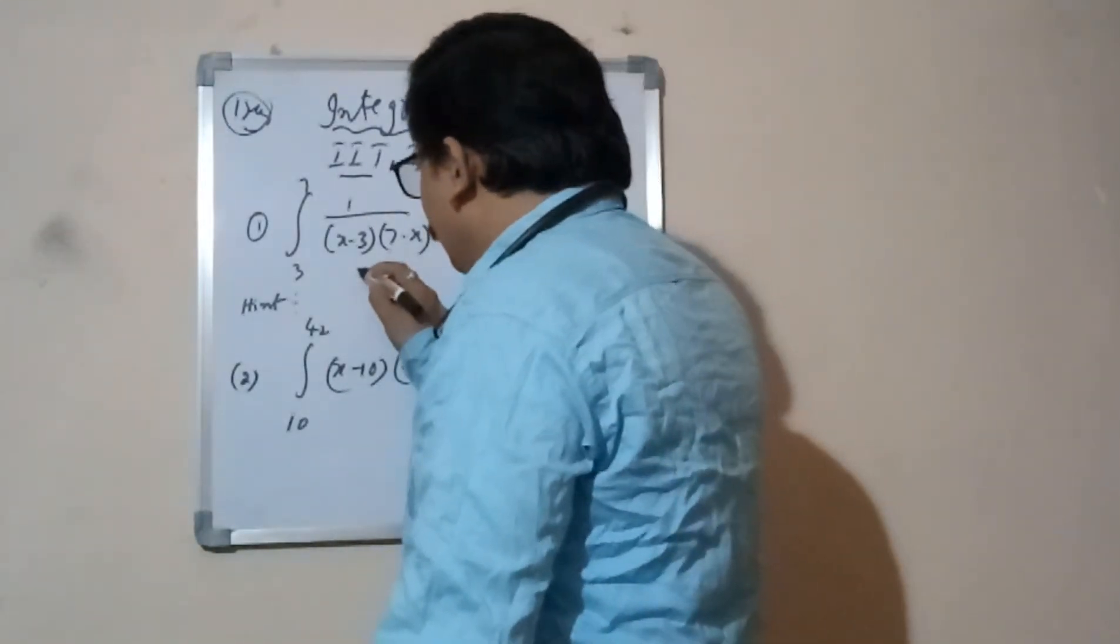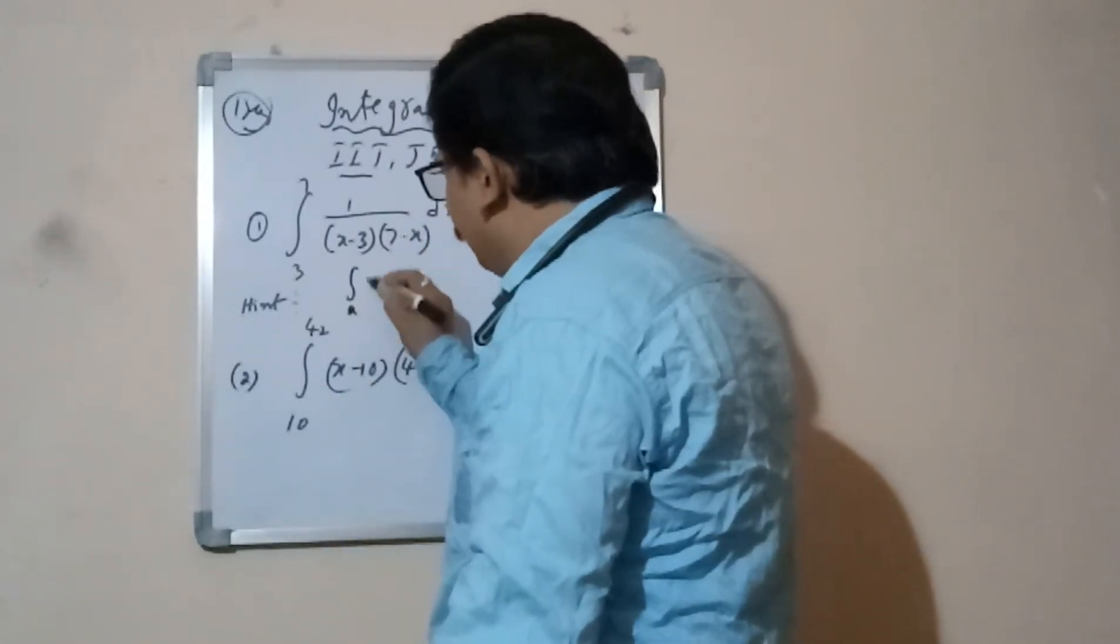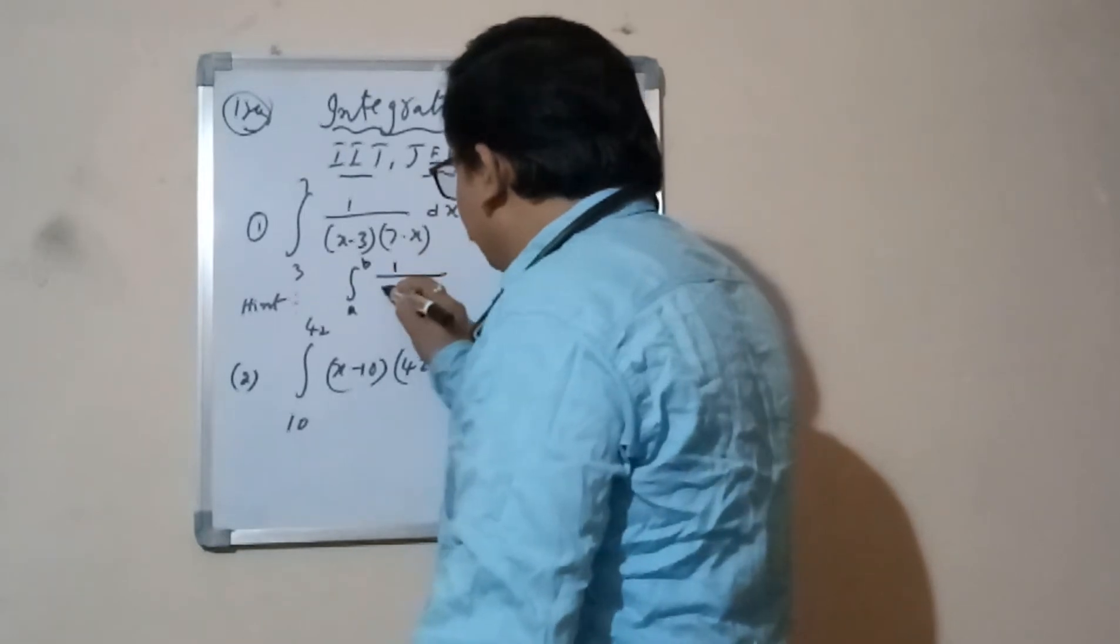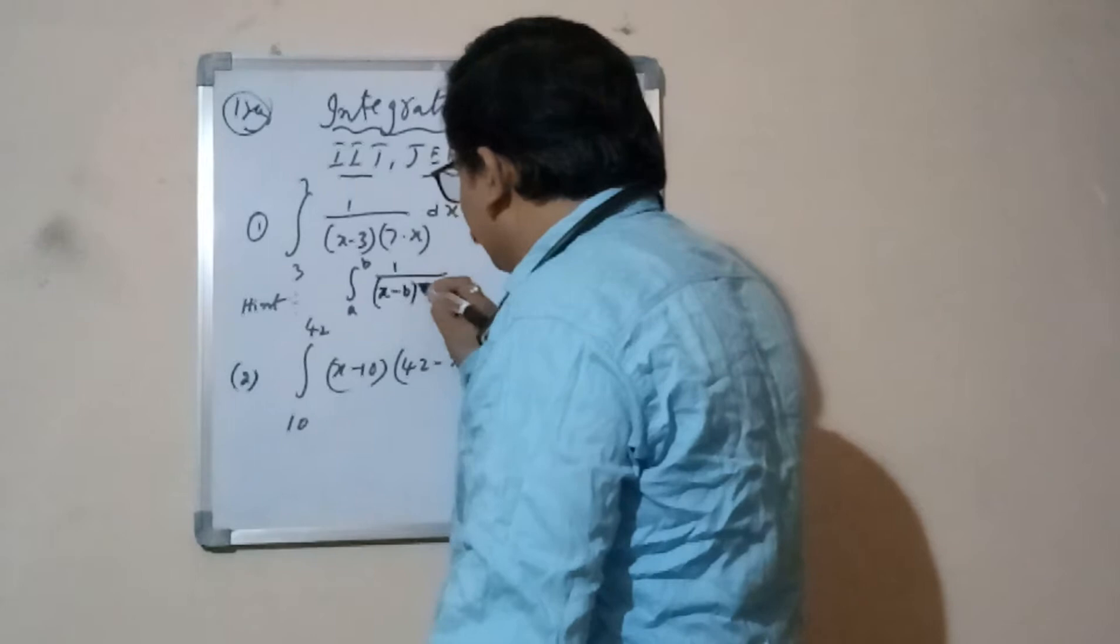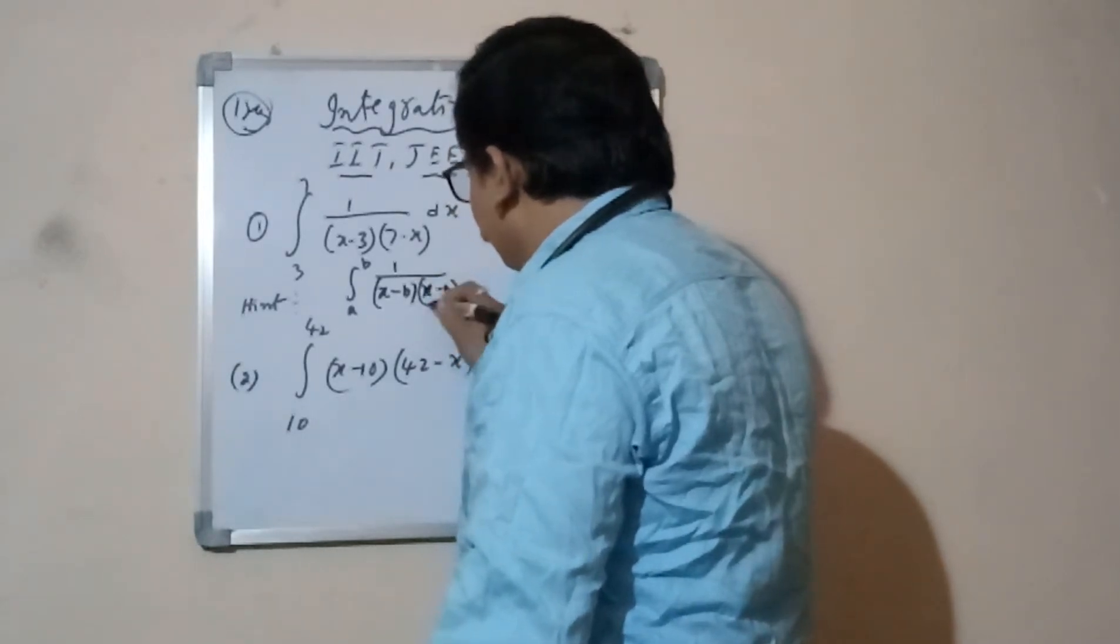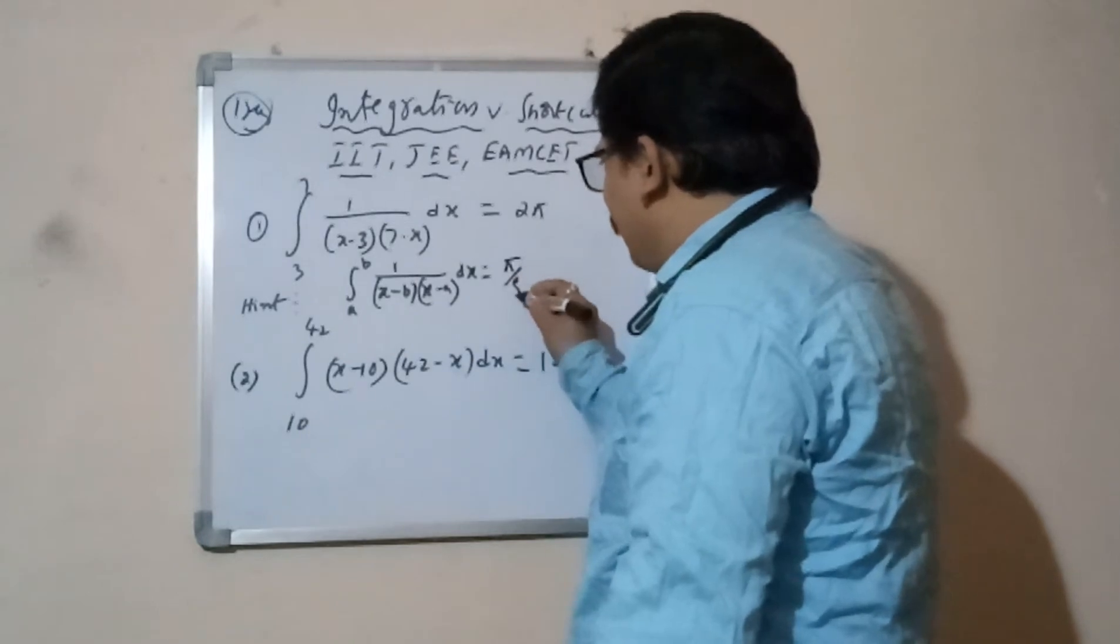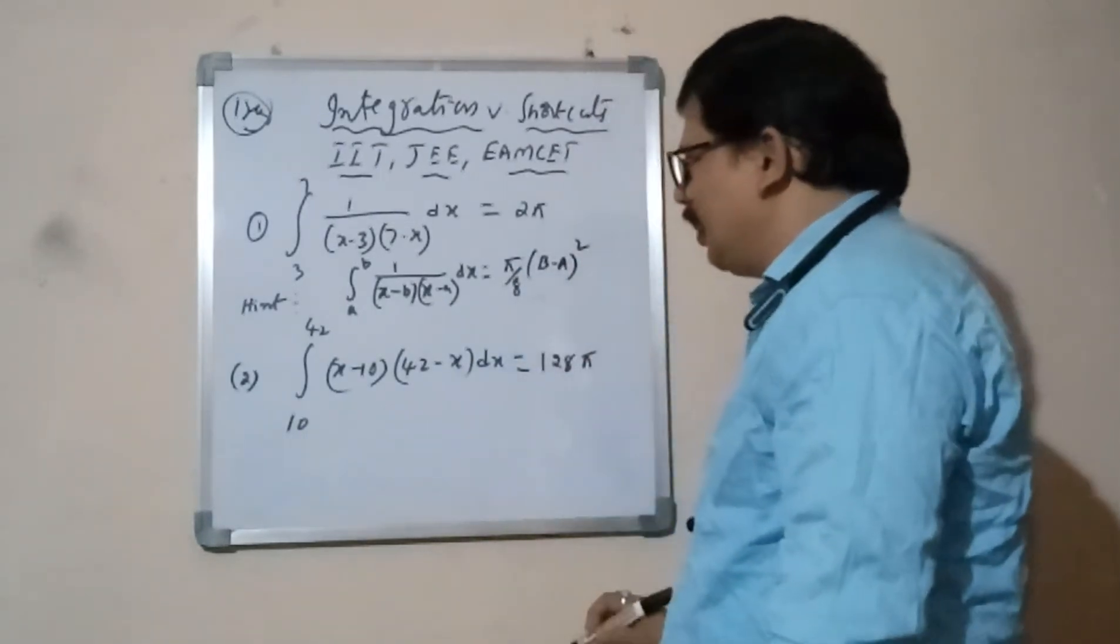Integral, here you see, a to b you write 1 by π, plus (x minus b)(x minus a) dx equal to formula here: π by (b minus a) all square. This actual formula.